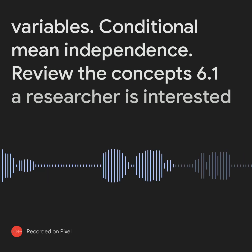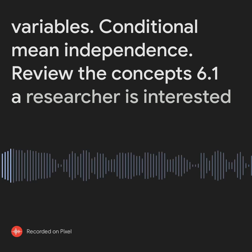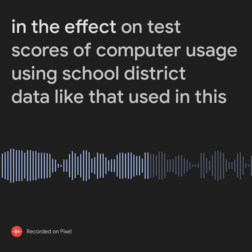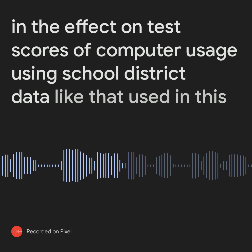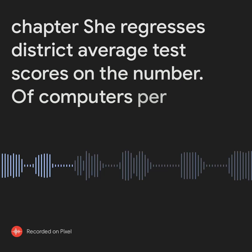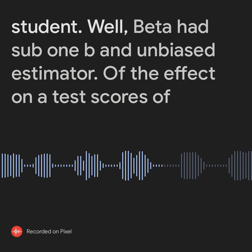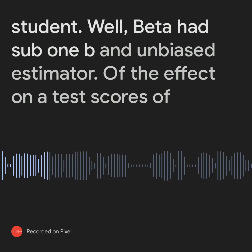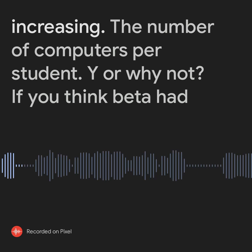Review the Concepts 6.1. A researcher is interested in the effect on test scores of computer usage. Using school district data like that used in this chapter, she regresses district average test scores on the number of computers per student. Will beta hat sub 1 be an unbiased estimator of the effect on test scores of increasing the number of computers per student? Why or why not?